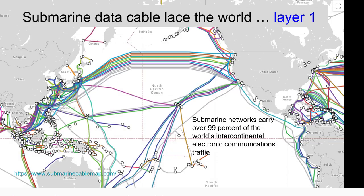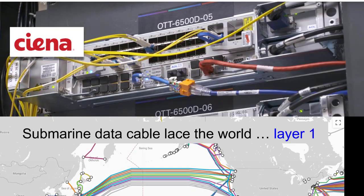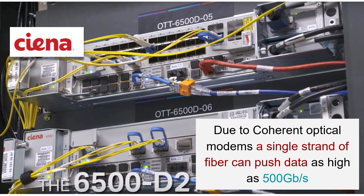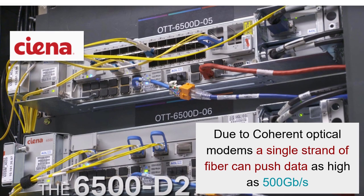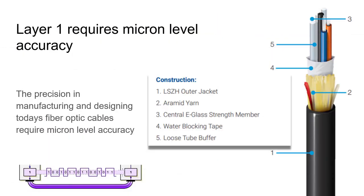And layer 1 is the high-speed metro ethernet connecting cities all over the globe. It's the submarine cables connecting the continents, pushing speeds of 2 terabits per second on a single fiber. Layer 1 is the new coherent optical modems that can push data in a data center up to 500 gigabits per second. Layer 1 can demand micron level accuracy. This precision is needed in manufacturing and designing today's fiber optic cables.